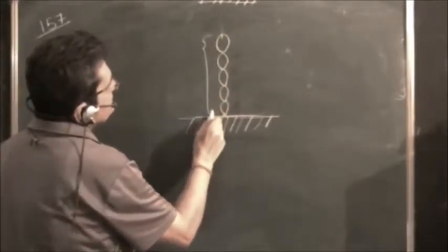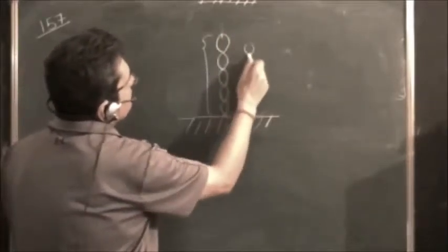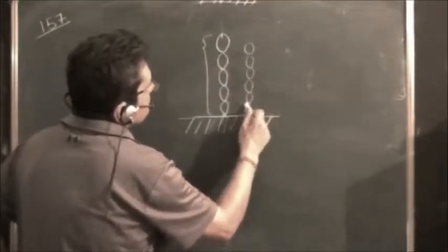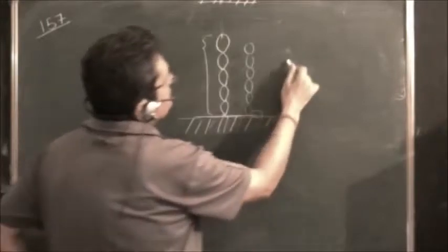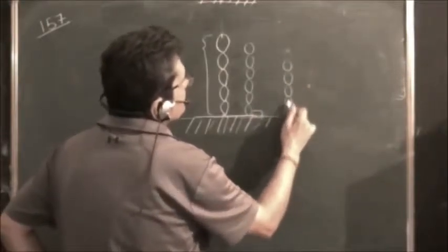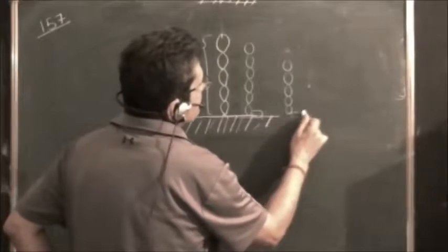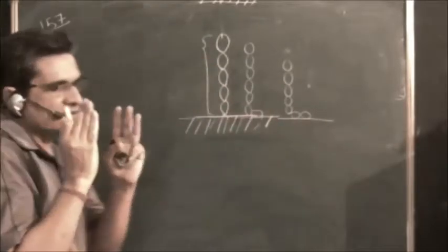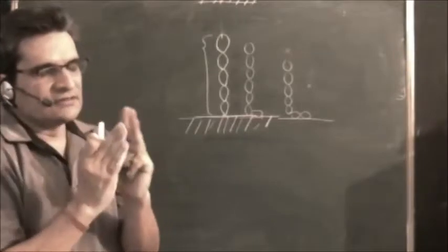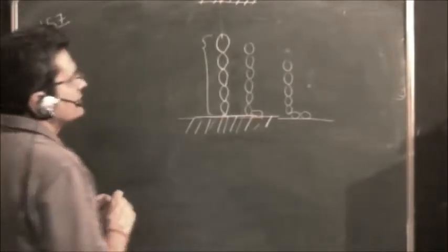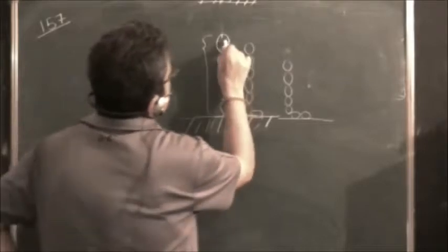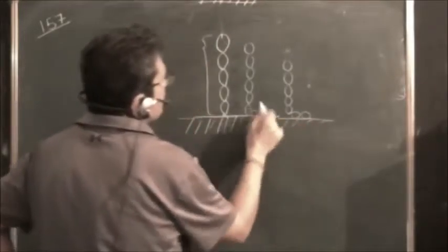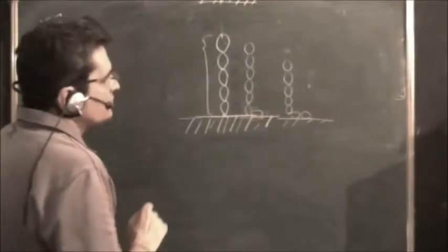Now what will happen? The chain will start falling down and it will be like this. It will keep on falling. For doing physics problems, especially the complicated ones, it is always advisable to just imagine a little bit and draw the diagram. In this case, the chain is falling and assembling here at the bottom.